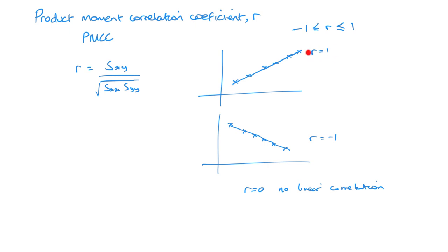It's worth noting that while you can calculate a correlation value between two variables, you must use common sense about whether those variables are actually related. Just because the number of cars on the road has increased and the number of TVs bought has decreased, it doesn't mean changing one affects the other — those two things clearly aren't linked. Whereas the age of a car and its value would affect each other — in general, the older the car, the less valuable it is.